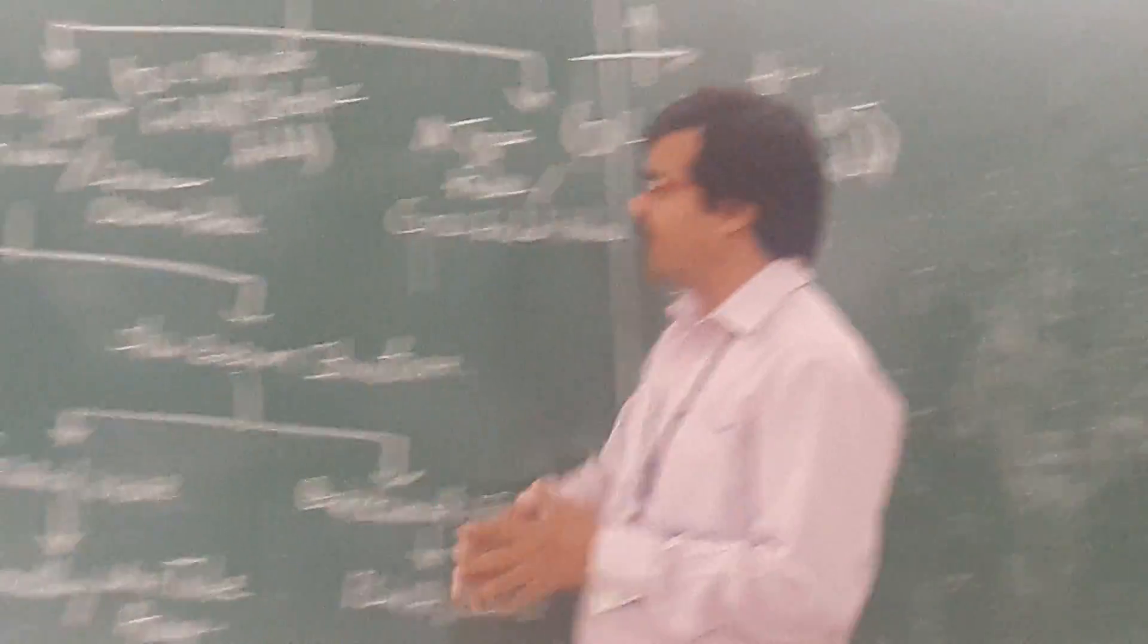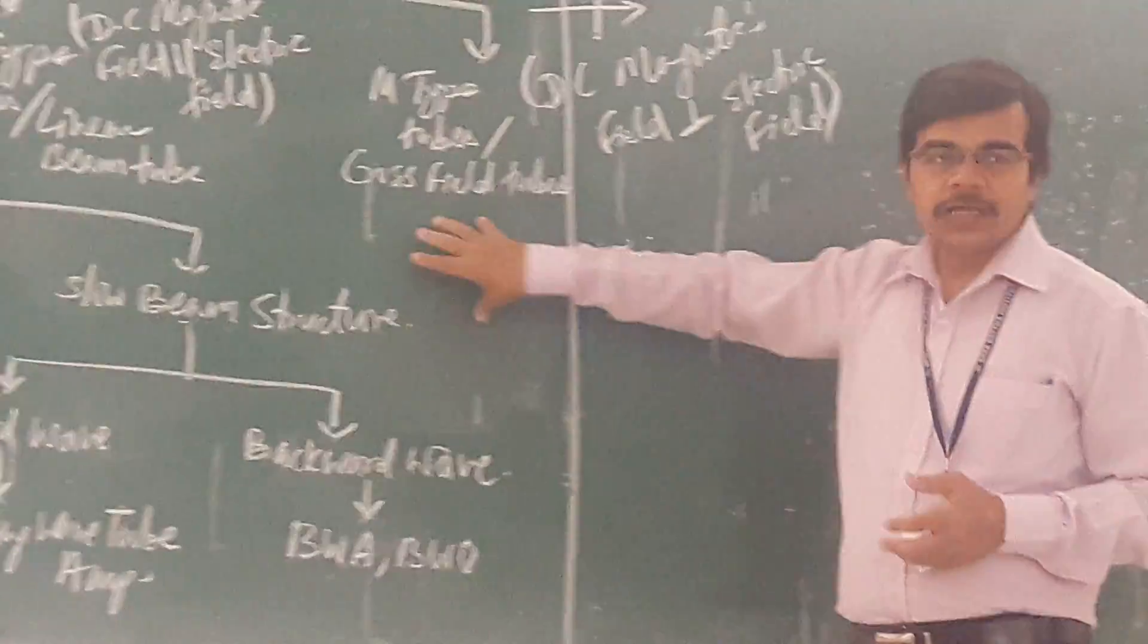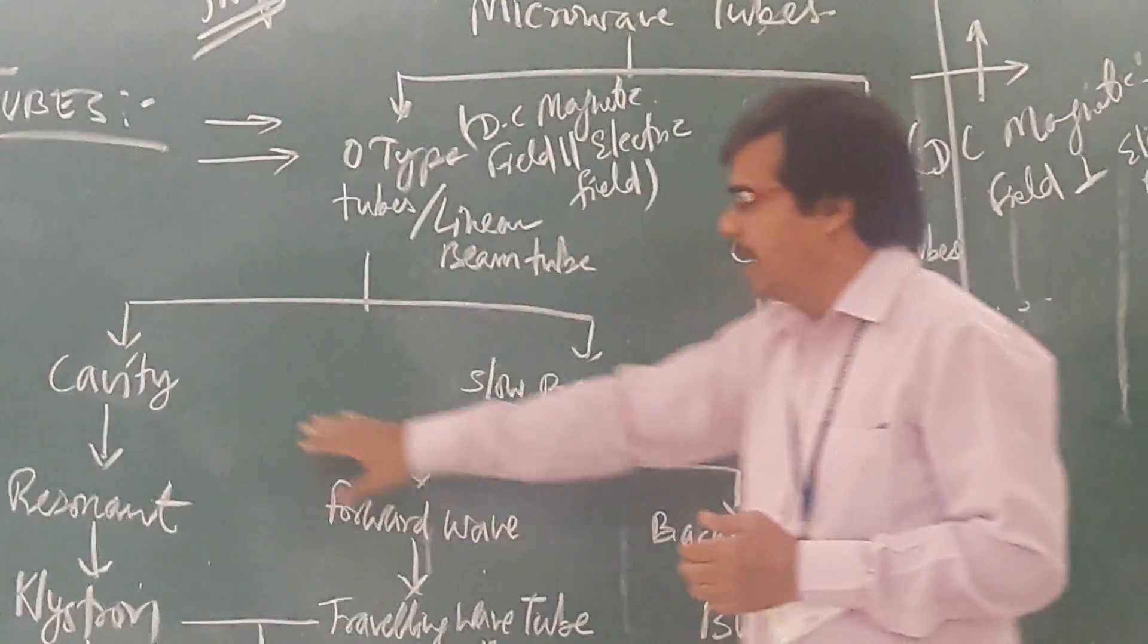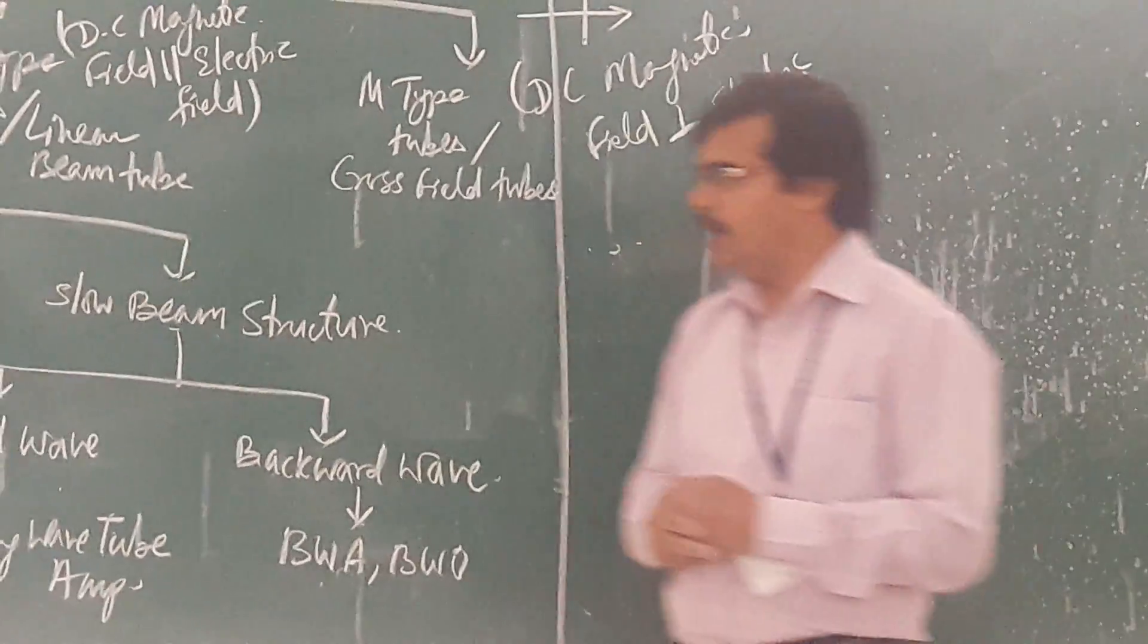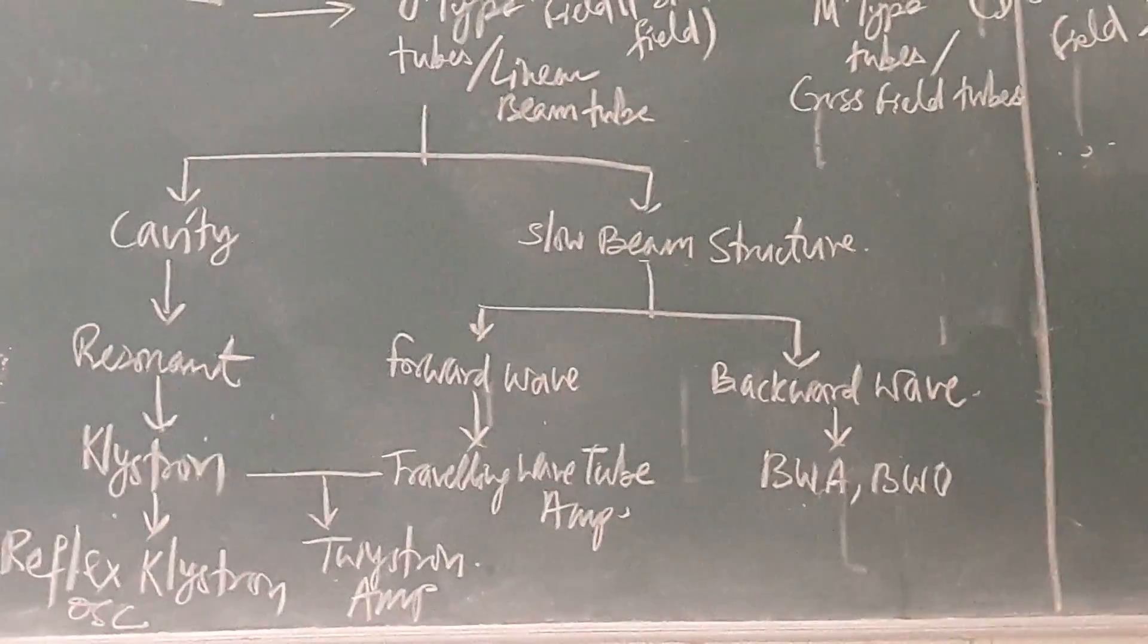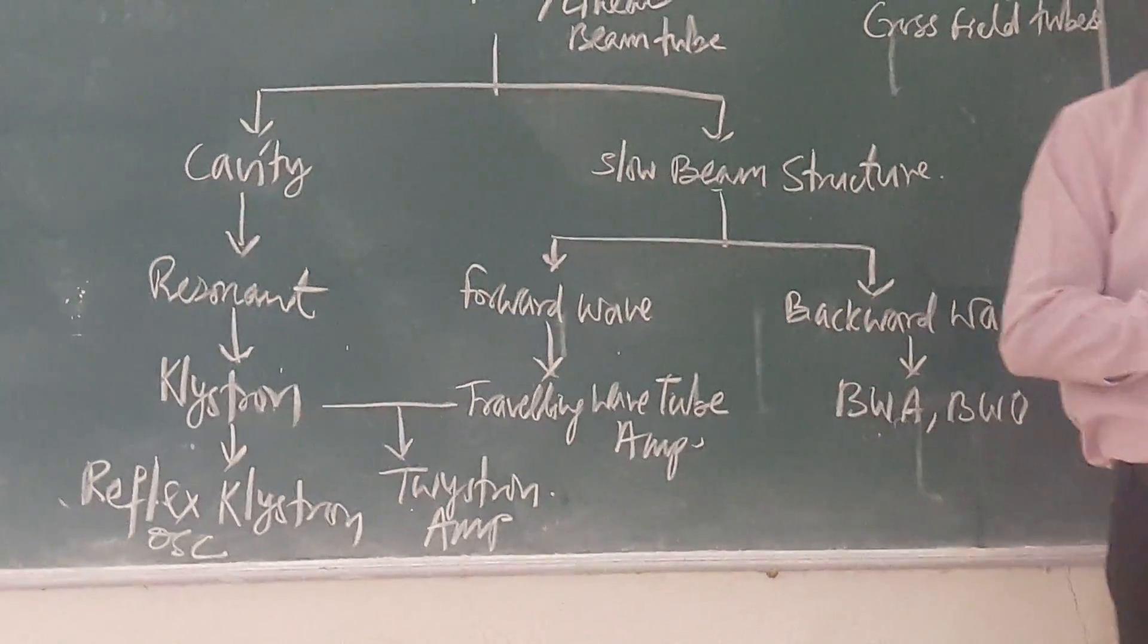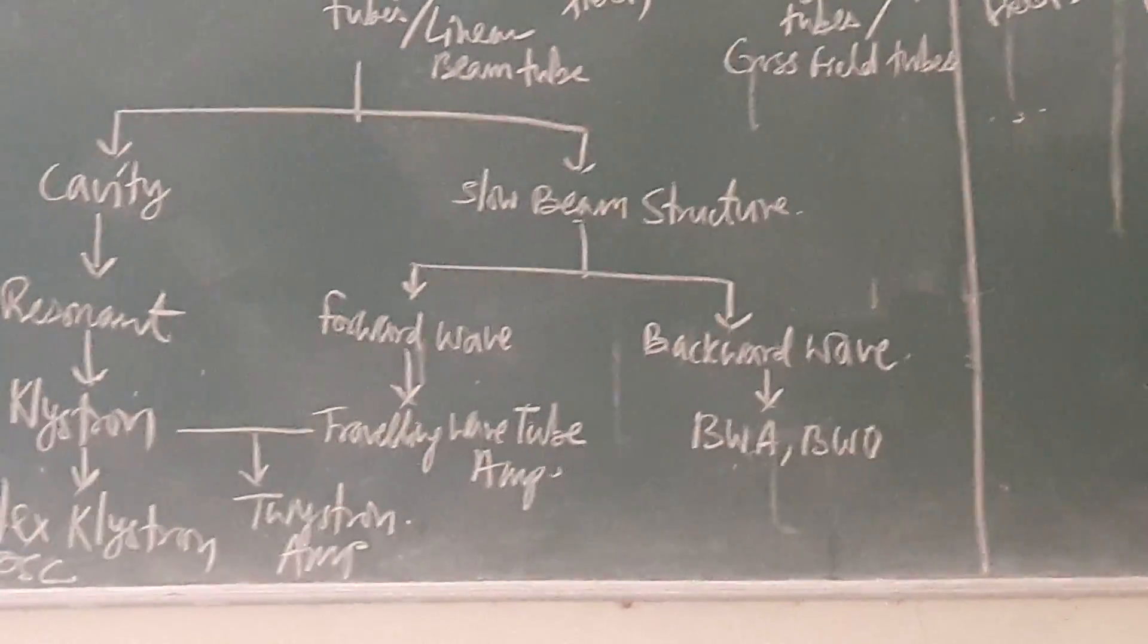Now, here we have to focus on your O type tubes only. Your M type tube, this will come in the next unit. So, when we are going for your O type tubes, here we will classify in cavity type and your slow beam structure. In cavity type, you are having klystron and in klystron, you are having your klystron. Klystron is an amplifier. So, in klystron, you are having two cavity klystron amplifier. You are having multi cavity klystron amplifier.